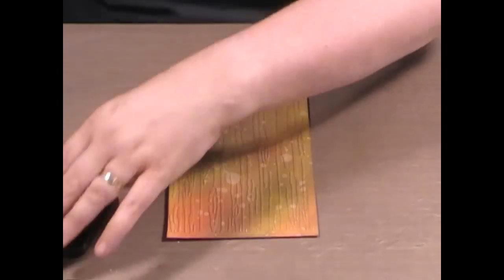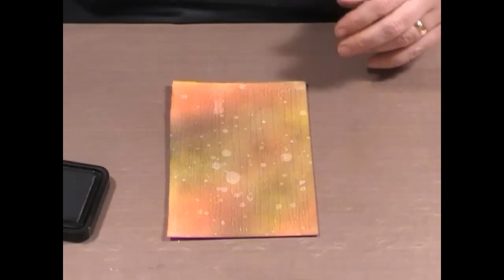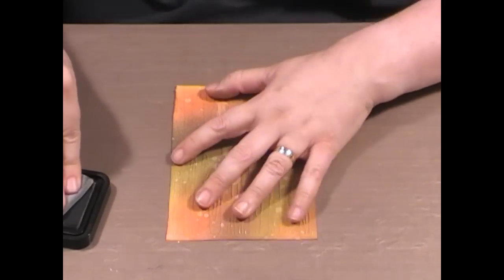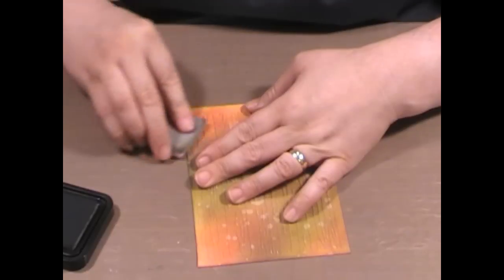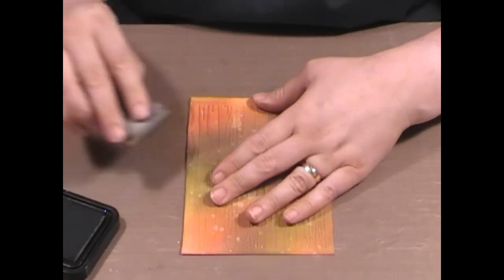That's gone through the machine now. We inked it up and then we put it through. Now we've got the base color which is all nice and interesting, but now what I want to do is highlight these raised areas.